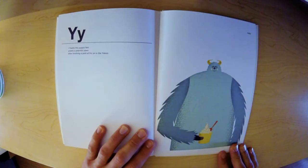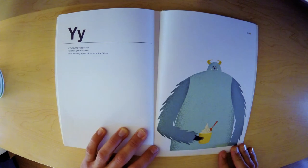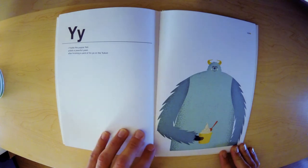Y. Yvette the yuppie yeti yodels a yearnful yawn after finishing a yard of fro-yo in the Yukon.